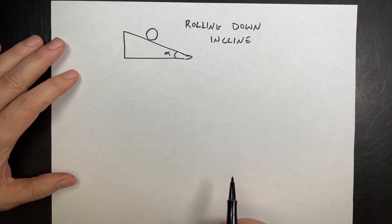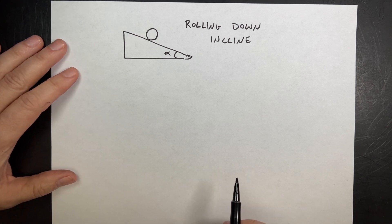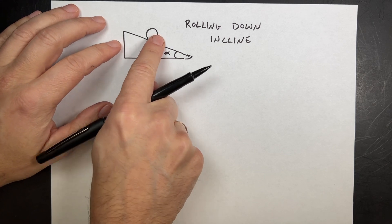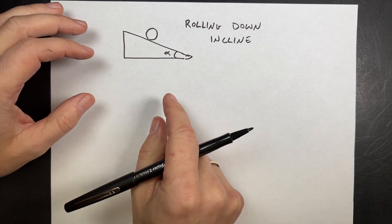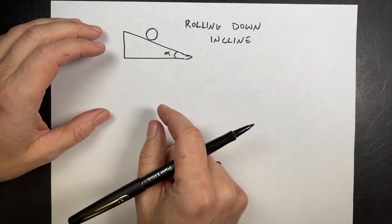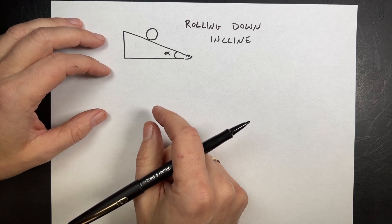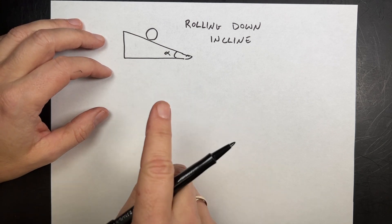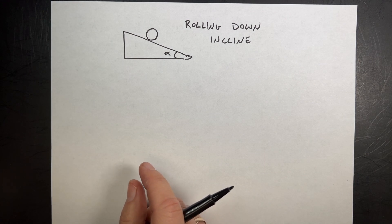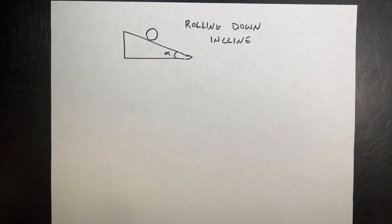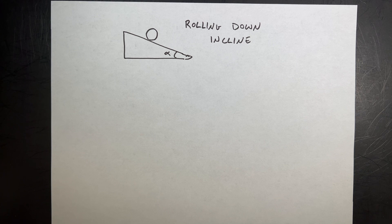Let's jump into this problem. Here we have a rolling object — it could be a hoop, a disc, a sphere, anything like that — rolling down an incline without slipping. We want to find the force of constraint, which is the force that makes it roll. In this case, it would be a friction force. We want to solve for that using Lagrange multipliers.